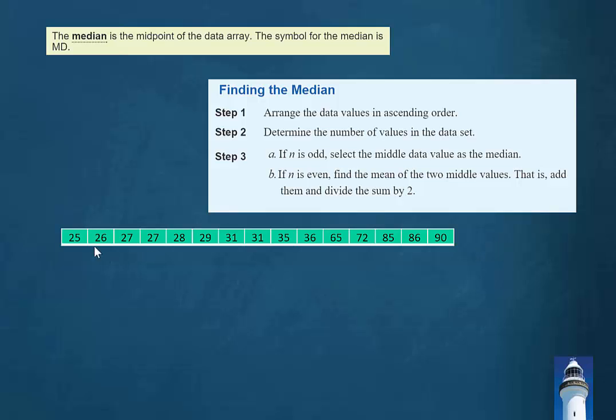Here we have a data set that ranges in value from 25 to 90. If we were to talk about the distribution, we would note that the data values are clustered more towards the bottom as we have the majority of the data values ranging from 25 to 36, and then all of a sudden it jumps to 65, 72, 85, 86, and 90. If we were to find the mean for this data set, we would find that the mean is 46.2.